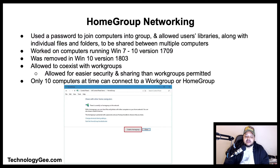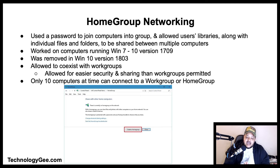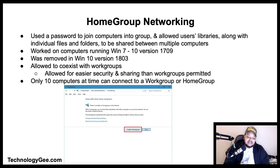Starting with Windows 7, Microsoft added a new ad hoc home networking system known as home group. The system used a password to join computers into the group and allow users' libraries along with individual files and folders to be shared between multiple computers. Only computers running Windows 7 through Windows 10 version 1709 could create or join a home group. In October 2018, home group was removed from Windows 10 starting with version 1803. Home groups were allowed to coexist with work groups, but home group networking allowed for easier security and sharing. Regardless of either type of networking, only 10 computers at a time can connect to a work group or home group computer.